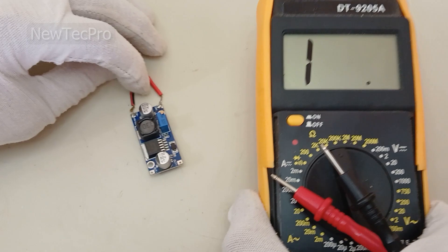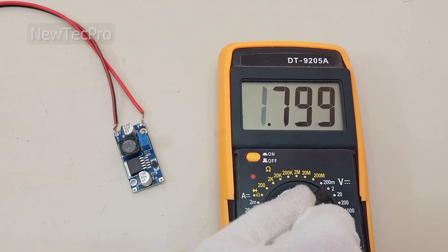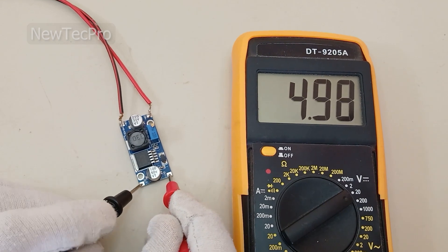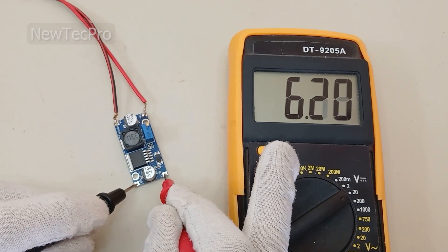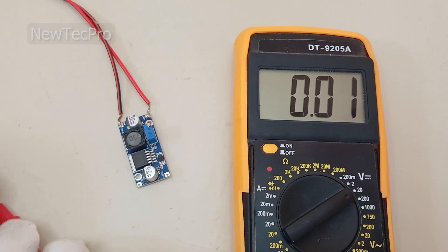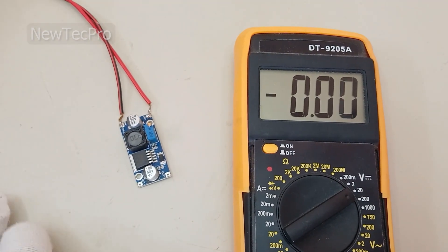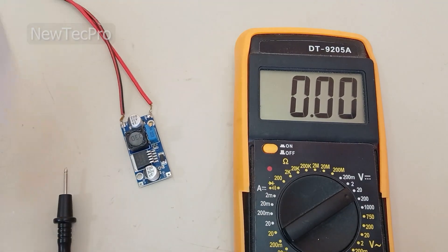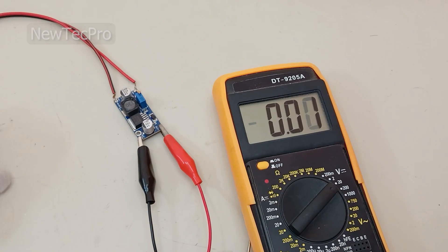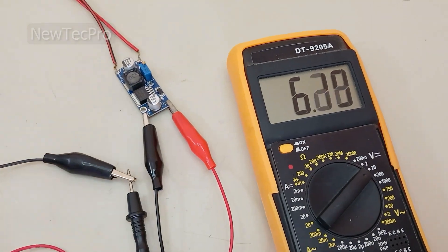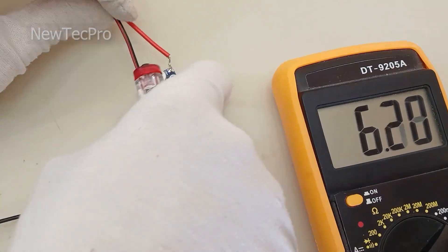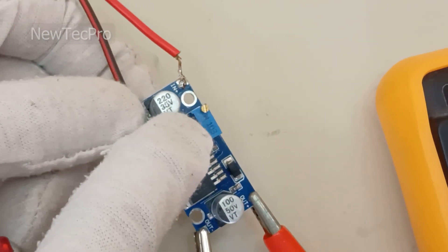Okay, now measuring voltage output. As you can see here, the output is 6 volts, and we'll try to step up the voltage to 12 volts. You can step up the voltage with this multi-turn potentiometer here.